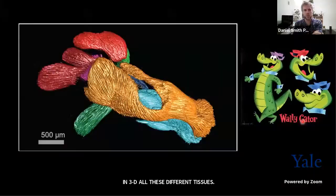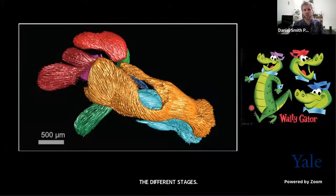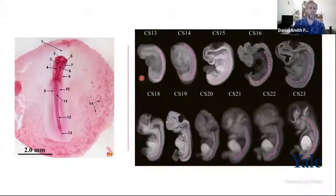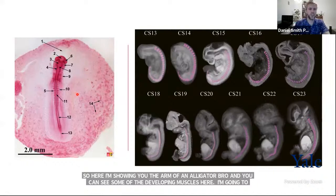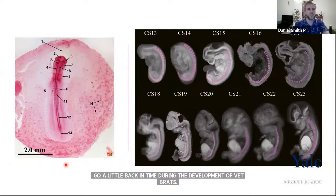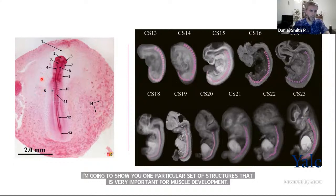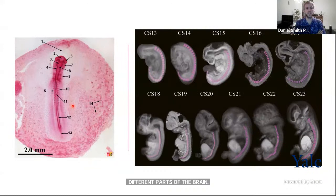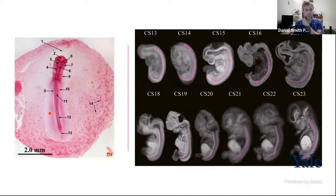Here I'm showing you the arm of an alligator embryo where you can see some of the developing muscles. Going back in time during development, I want to show you one particular set of structures that is very important for muscle development. Here is a very early chicken embryo — in this wormy-looking embryo, you can see what is going to become different parts of the brain. This rod labeled with 11 is the neural tube, which will form the neural spine and the brain.